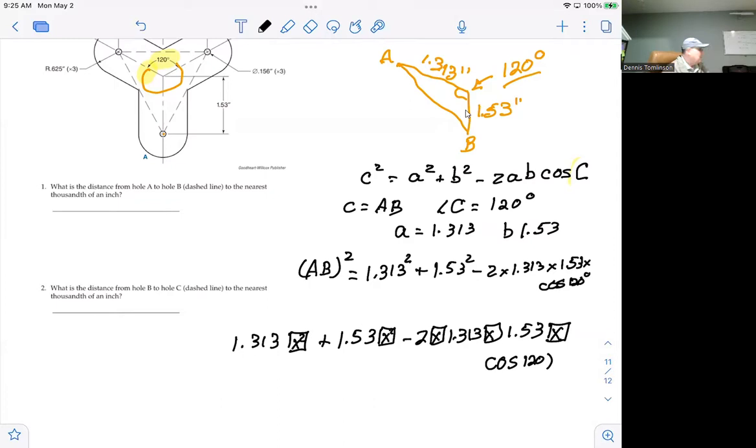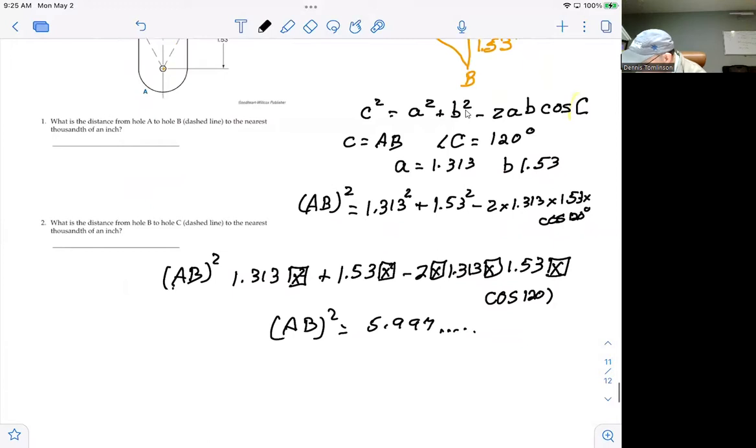And if you do this math, you're going to get 5.997 for the length of AB squared, 5.997 and some more decimal digits.